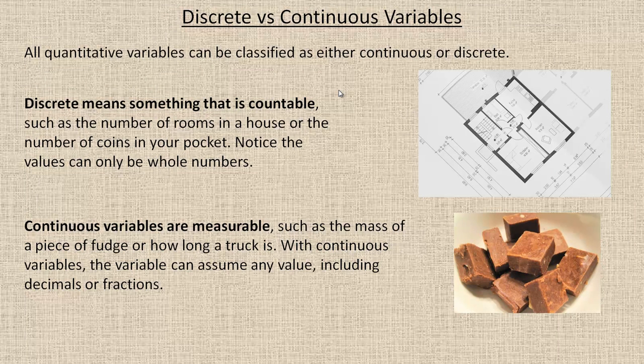Now, the variables listed from the previous page that were quantitative, that were numerical. Numerical things can be further broken down into two different kinds. Those two different kinds are called continuous or discrete.